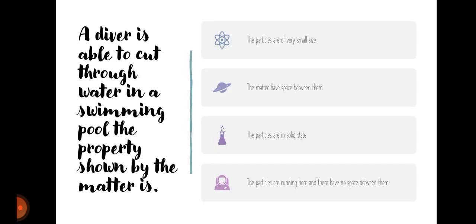Our first question is: a diver is able to cut through water in a swimming pool. The property shown by the matter is — options are: (A) the particles are of very small size, (B) the matter has space between them, (C) the particles are in solid state, (D) the particles are running here and there, (E) have no space between them.